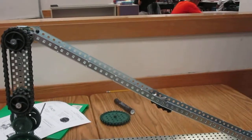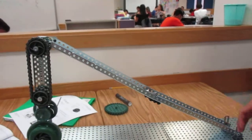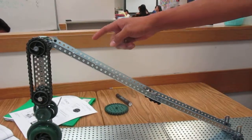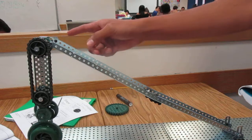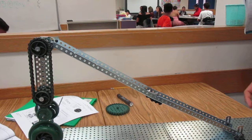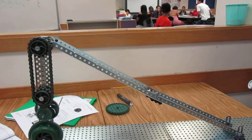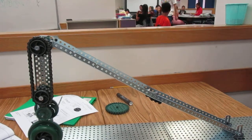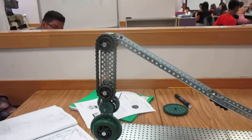So for the incline plane, it's 24 inches long, and for the height, it's 12.5 inches tall. So we divided those two and got 1.92 for the IMA.